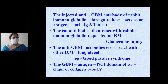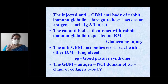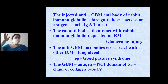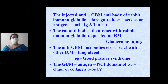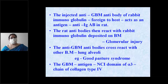In Goodpasture syndrome, the anti-GBM antibodies produced — whatever glomerular basement membrane antibodies are generated — also react with the lung alveoli. These antibodies cross-react with the lung alveoli, and this is what is seen in Goodpasture syndrome.